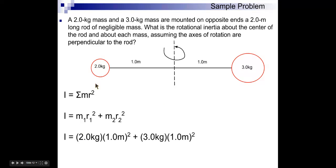So, for M1, M1 is two kilograms. It's one meter away from our rotational axis. M2 is three kilograms, and it's also one meter away from our rotational axis.